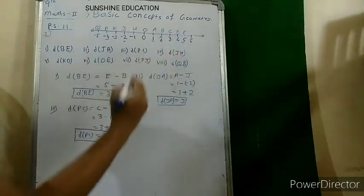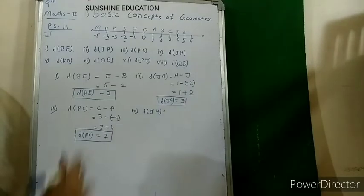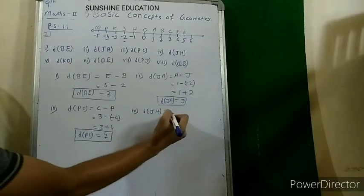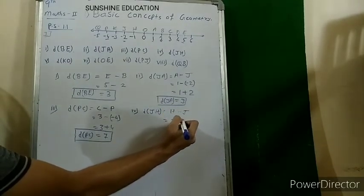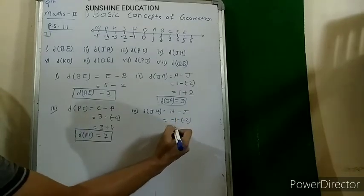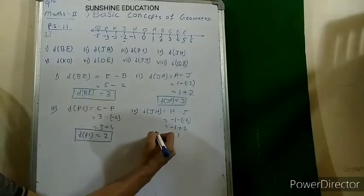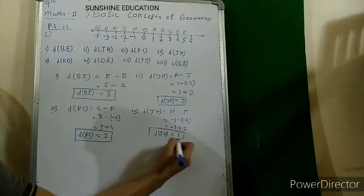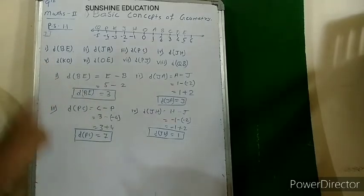Fourth: distance JH. Between J and H, H is at the right-hand side so H is greater. We subtract H minus J. H is minus 1 and J is minus 2. So minus 1 minus (minus 2) = minus 1 plus 2 = 1. Distance JH is 1 unit.